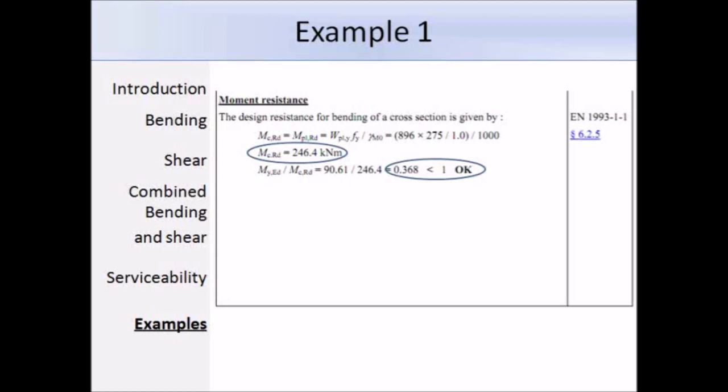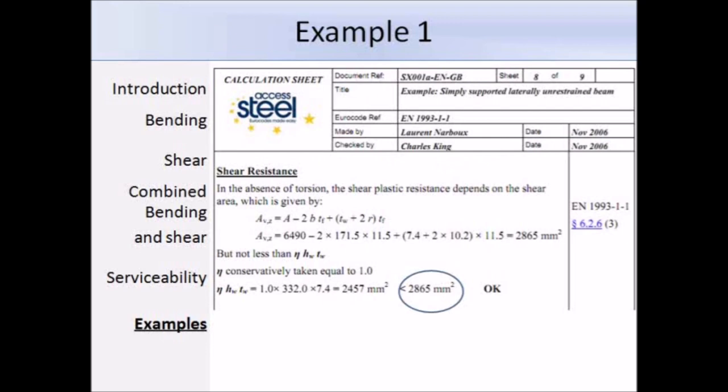This next bit deals with the shear resistance of the section. Here they've worked out the shear area, and you get that expression from the Eurocodes. They've indicated on the right-hand column that they're referring to clause 6.2.6, part 3, and that's where you get the expressions to work out the shear area. For rolled I-sections, you need to make sure that it's greater than this condition, eta times hw times tw. It is greater, and the shear area works out as 2865 millimetres squared.